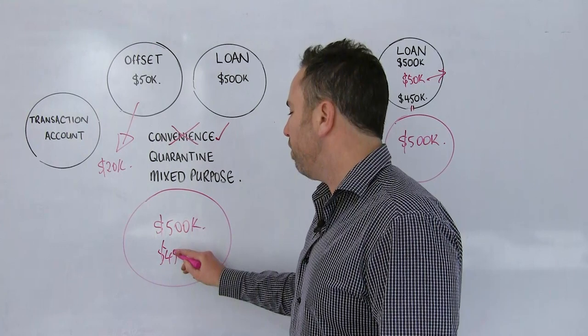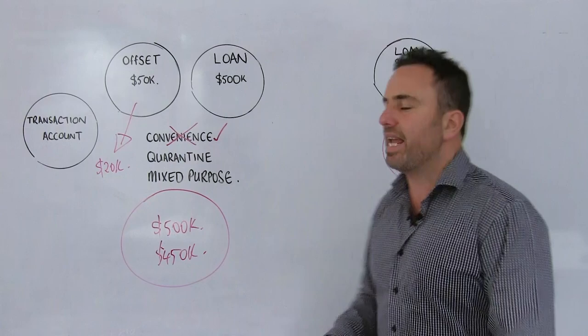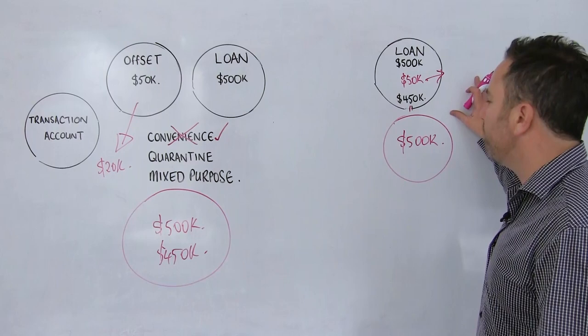Now, in this scenario, in this scenario, my outstanding debt is still the same. The only difference is the mix of it. Here, I've got $550,000 worth of owner-occupied, $450,000 worth of investment. Here, I've got $500,000 of each.